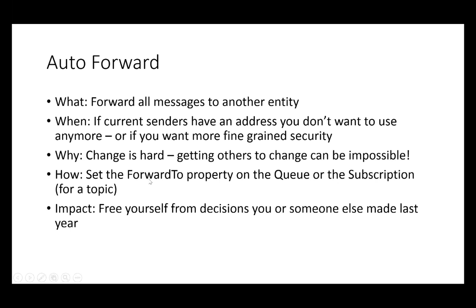You just set the forward to property on the queue, or on the subscription if it's a topic. This is cool because it lets you change your mind later on. You can only auto forward to one entity, but if you receive a message on a queue, you can auto forward from that queue to a topic, and within that topic you can send to a bunch of other places. You can daisy chain some pretty complex topologies.